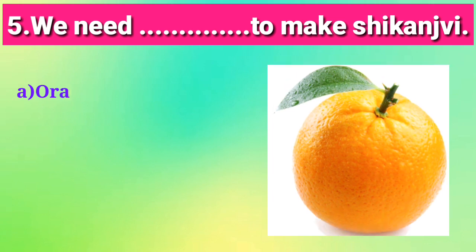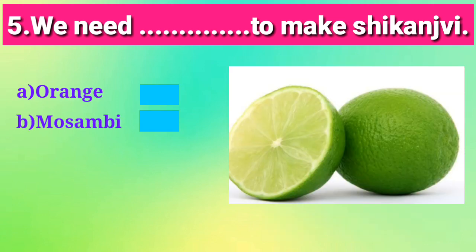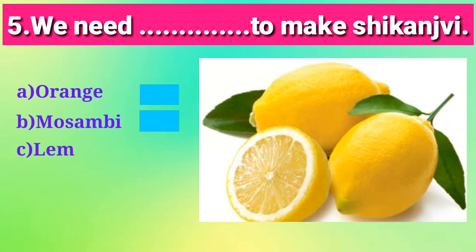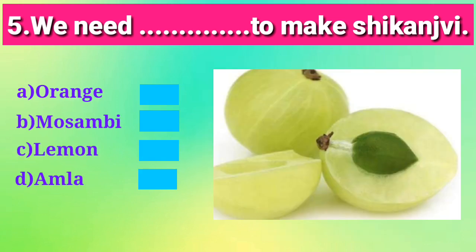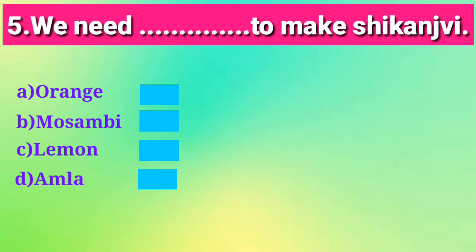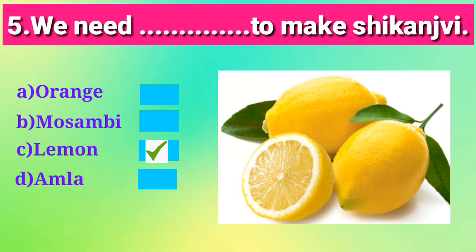The next question is: we need dash to make shikanjwi. The options are orange, mausamee, lemon, or ramla. The right answer is option C, that is lemon. You all know we need lemon to make shikanjwi.